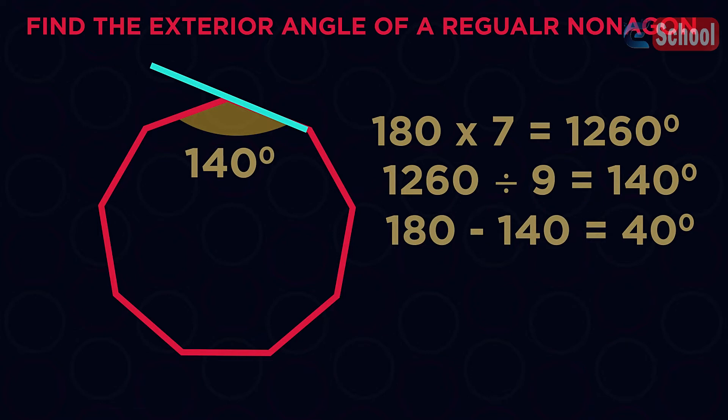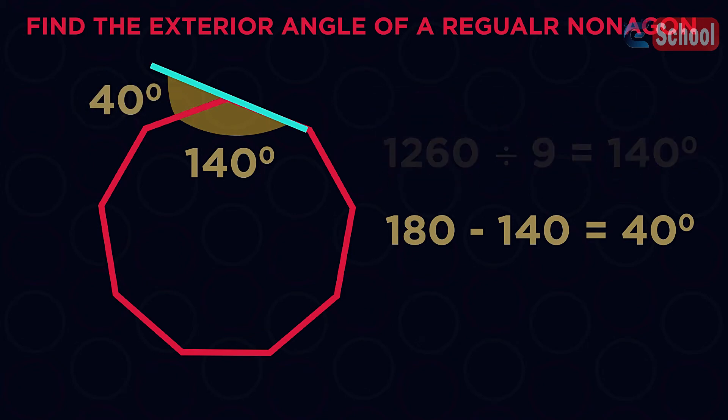180 take away 140 gives us the exterior angle of 40 degrees. Simple.